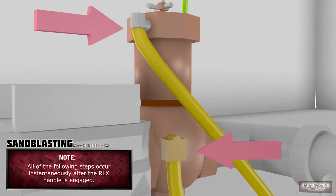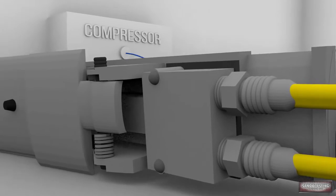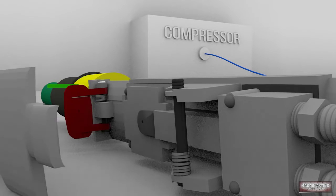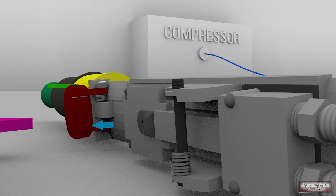After the abrasive has been added, a series of events must occur before blasting begins. The twin-line hoses run from the inlet valve to the control handle. When the handle is not engaged, air is released at its base. This is indicated by the blue arrows.